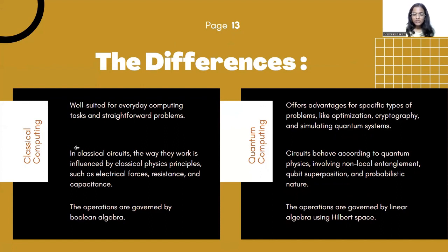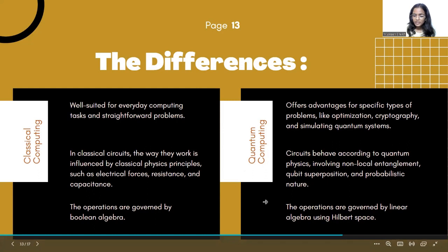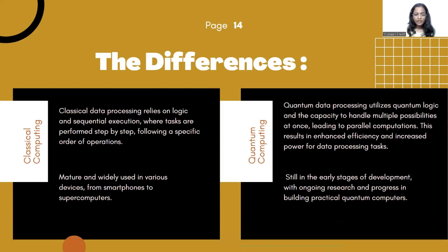In classical circuits, behavior is influenced by classical physics principles such as electrical forces, resistance, and capacitance, whereas in quantum computing, circuits behave according to quantum physics, involving non-local entanglement, qubit superposition, and probabilistic nature. The operations are governed by Boolean algebra in classical computing, whereas in quantum computing the operations are governed by linear algebra using Hilbert space. Classical data processing relies on logic and sequential execution, whereas quantum data processing utilizes quantum logic and the capacity to handle multiple possibilities at once, leading to parallel computation and enhanced efficiency.